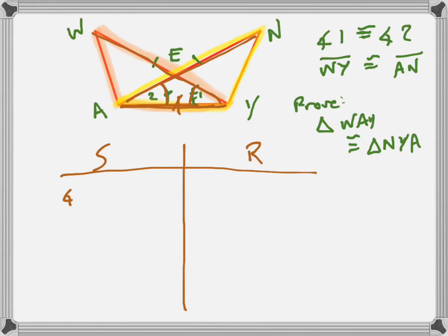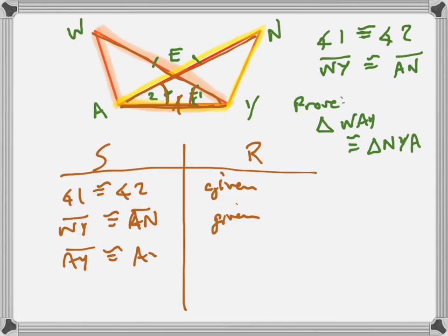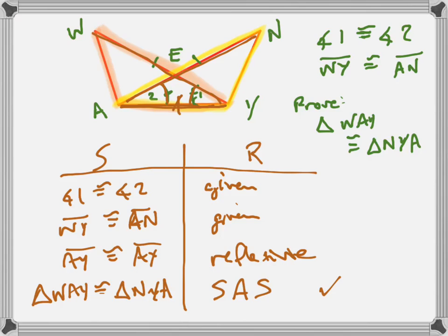So my statement one is angle one is congruent to angle two. That's given. WY is congruent to AN. That's also given. And then I'm going to write AY is congruent to AY, and that's by the reflexive property. And then now I can say at the end that WAY is congruent to triangle NYA, and that's by side-angle-side. And I'm done.